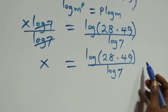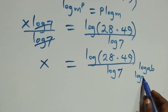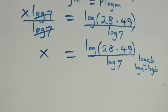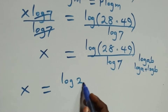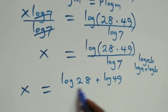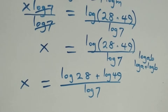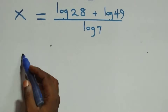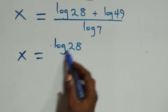This follows from the law of logarithms: when we have log of a times b, it is the same thing as log a plus log b. So what we have becomes x equals log 28 plus log 49, all over log 7. We then separate this into two fractions: x equals log 28 over log 7 plus log 49 over log 7.